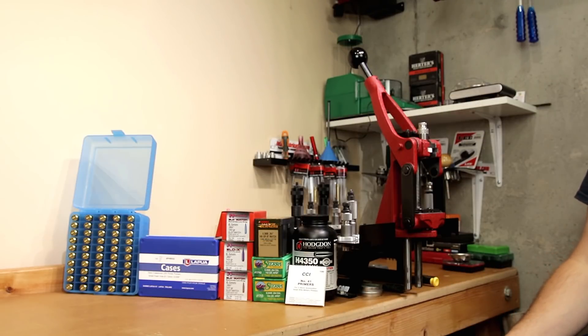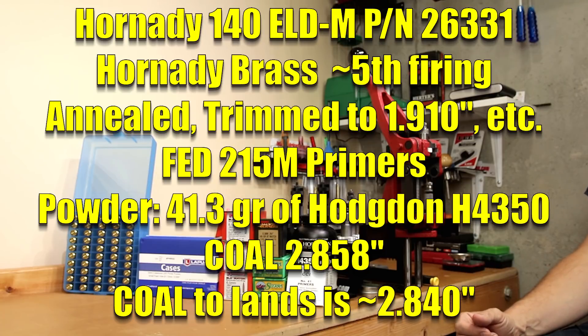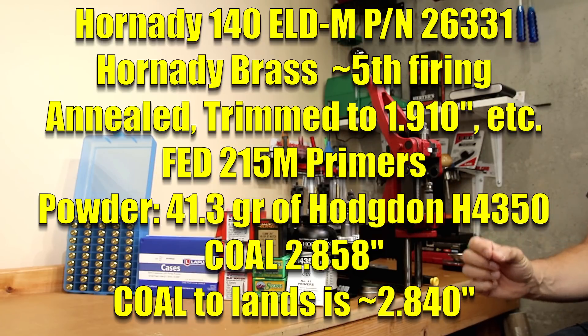We actually started off by cleaning the barrel, firing one round, cleaning again, firing another round, cleaning again. Then we shot a three-shot group. Now, from there, we cleaned every five rounds. The load we were using for break-in is basically what I refer to frequently on the channel as my standard load. It's 41.3 grains of H4350 in Hornady brass. The Fed 215M was the primer that we were using. The cartridge overall length for those is about 2.858 inches. And to be perfectly honest, that is into the rifling in our new barrel. But again, we're going to get to all those details if you stick around.